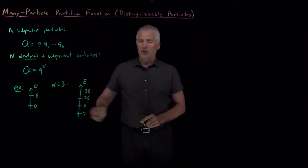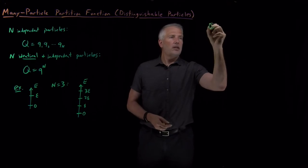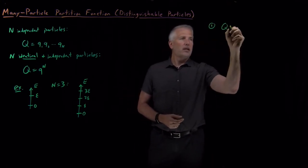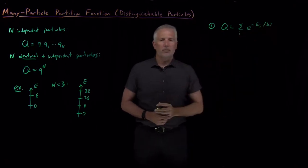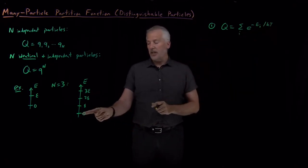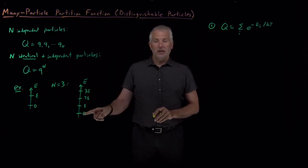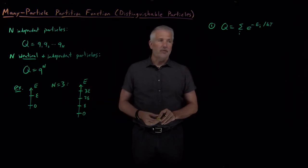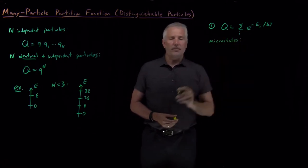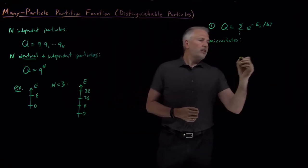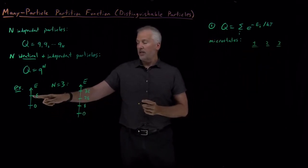So that's what the allowed energy levels look like for the full system of three particles, and here's what the energy levels look like for a single particle. We can calculate the partition function in two different ways. First, let's think about it as the sum of e to the minus energy over kT for each of the allowed states of the system, keeping in mind there's some degeneracy to worry about. Let's write out all the different microstates — the full description of which particle is in which state — for particle one, particle two, and particle three.